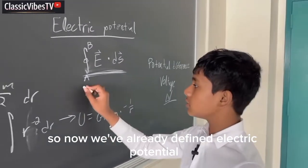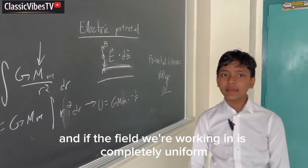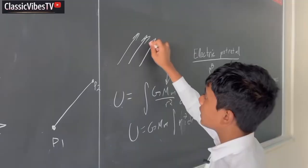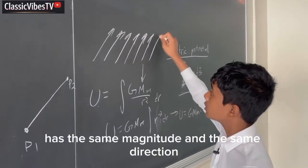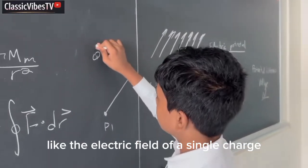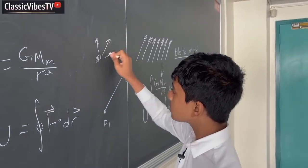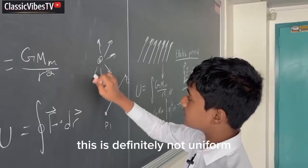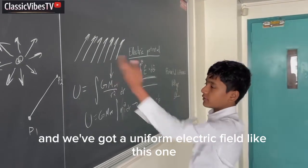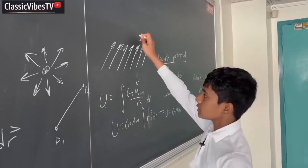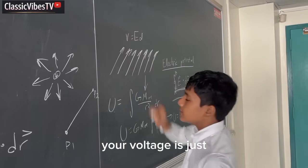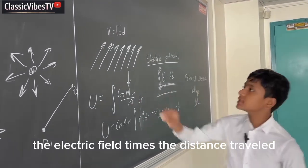So now, we've already defined electric potential. And if the field we're working in is completely uniform, has the same magnitude and the same direction wherever you go, so that means it's not radial like the electric field of a single charge. This is definitely not uniform. And we've got a uniform electric field like this one.